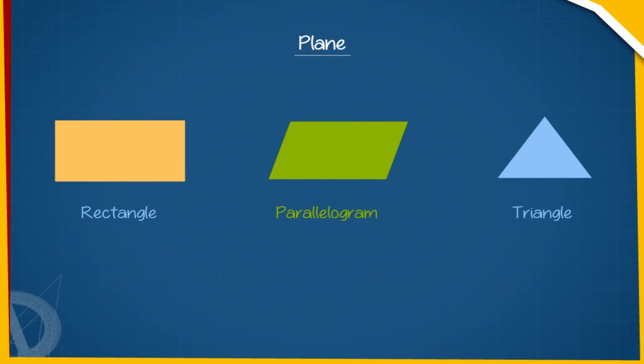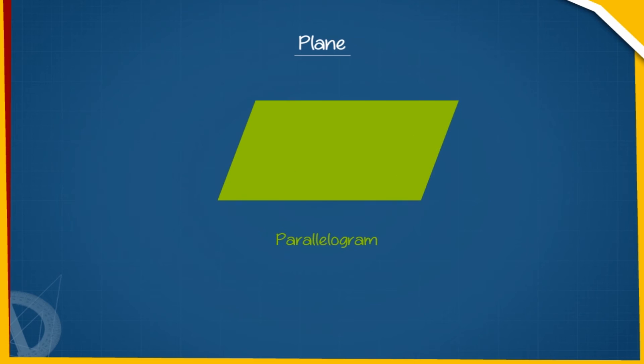We represent a plane in the form of different two-dimensional surfaces like a rectangle, a parallelogram, or a triangle. For example, the parallelogram ABCD shown here represents a plane.